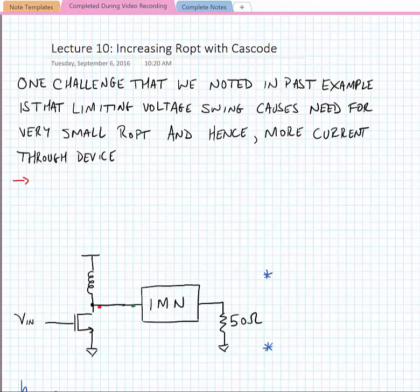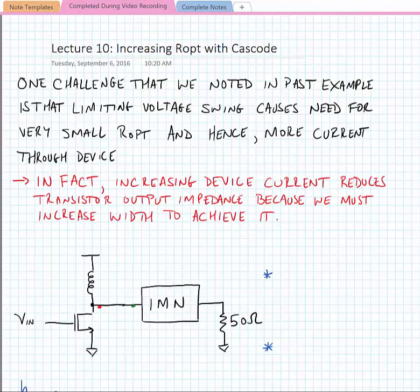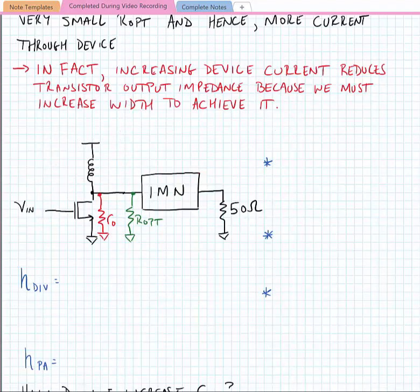One of the things we noticed when looking at the Class A example from the last lecture was that limiting the voltage swing causes the need for a very small optimum resistance R_opt, and hence it requires more current through the device. In fact, increasing the device current reduces the transistor's output impedance even more because we must increase the width of the transistor to achieve the higher current through the device.